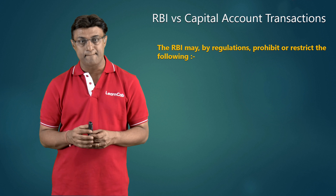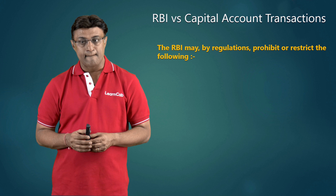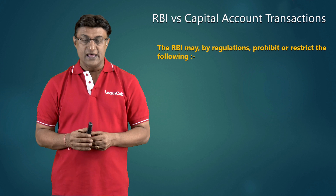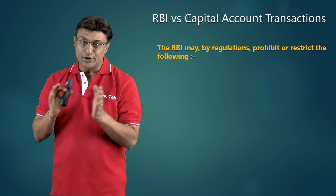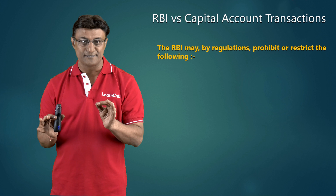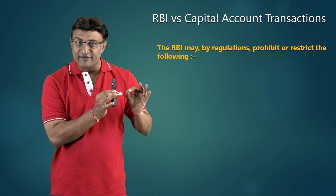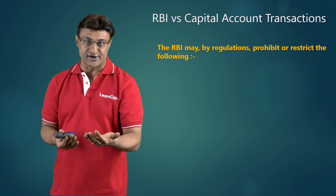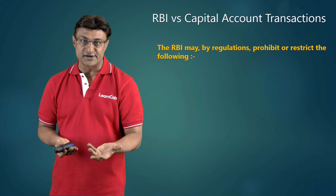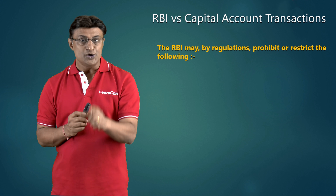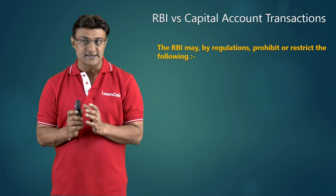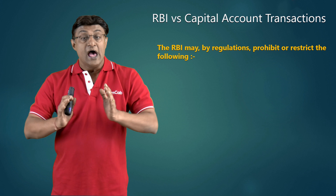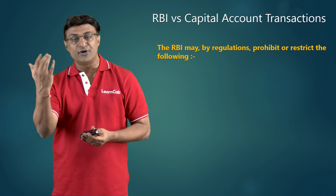The two transactions freely permitted are: payments due on amortization of loans — which is repayment of a loan — and for depreciation of direct investments in the ordinary course of business, which is providing for replacement of direct investments or trade investments in the ordinary course of business. One is a liability, the other is an asset. These two capital account transactions are untouchable and they are untouched by the RBI.